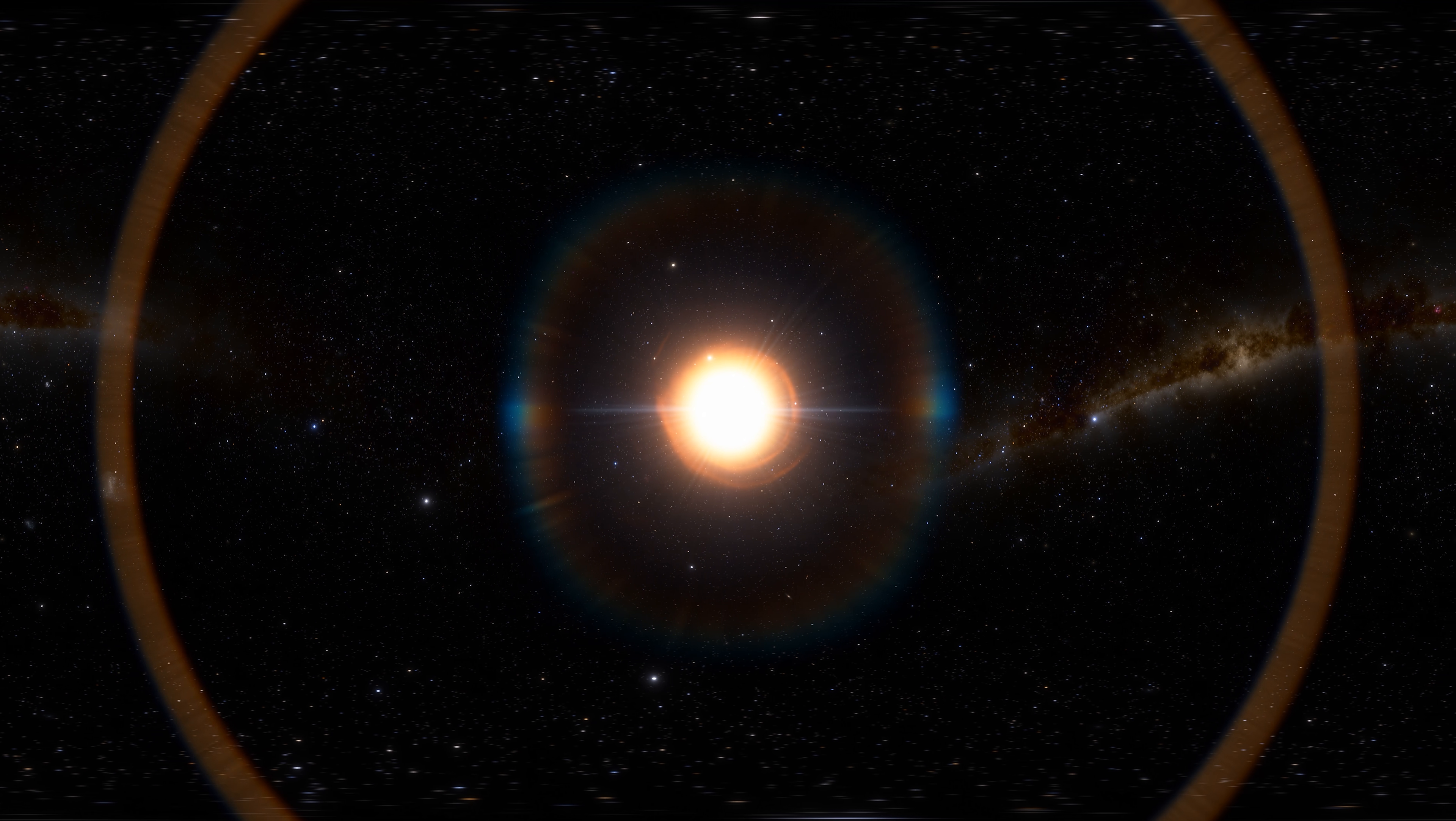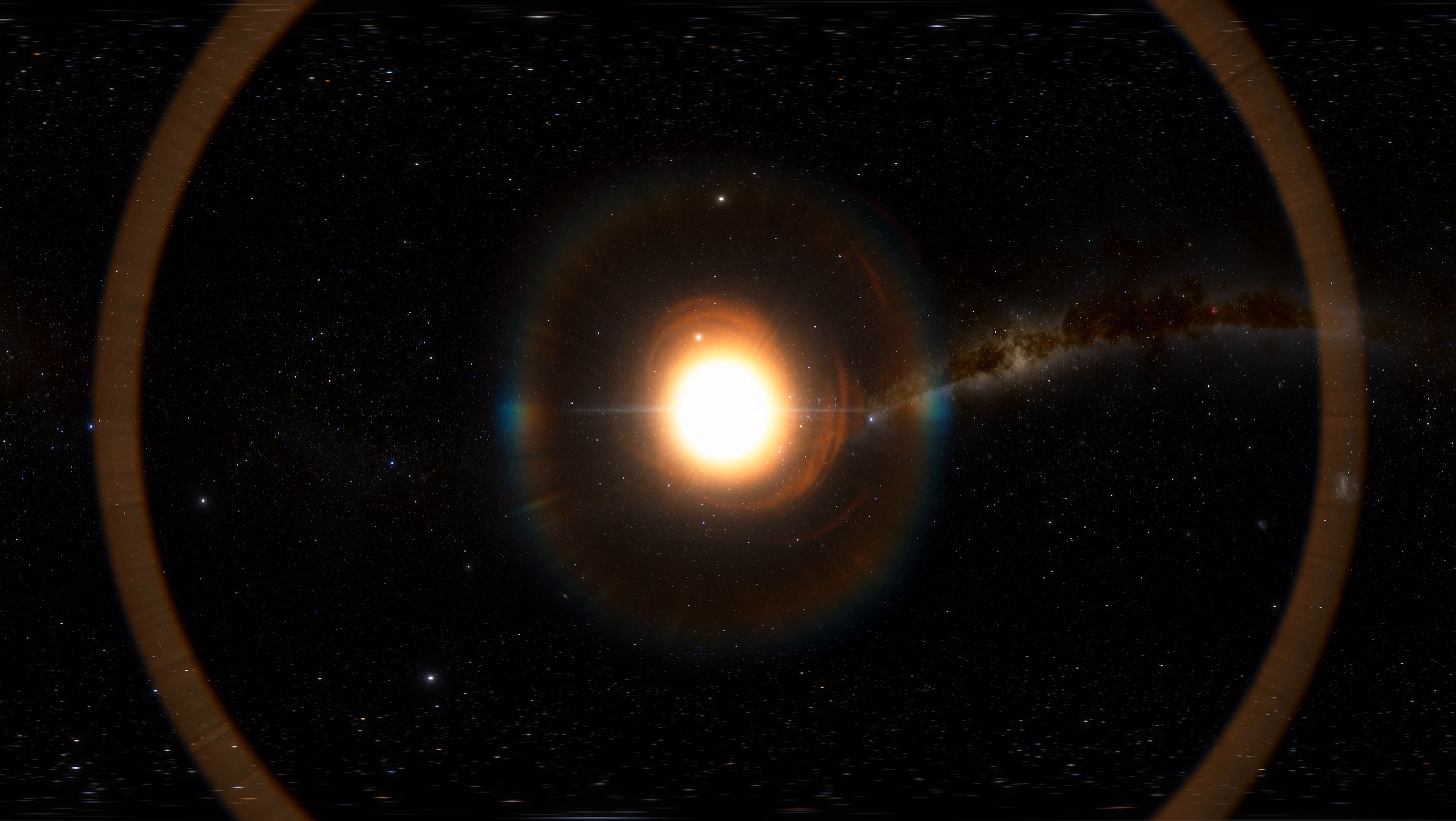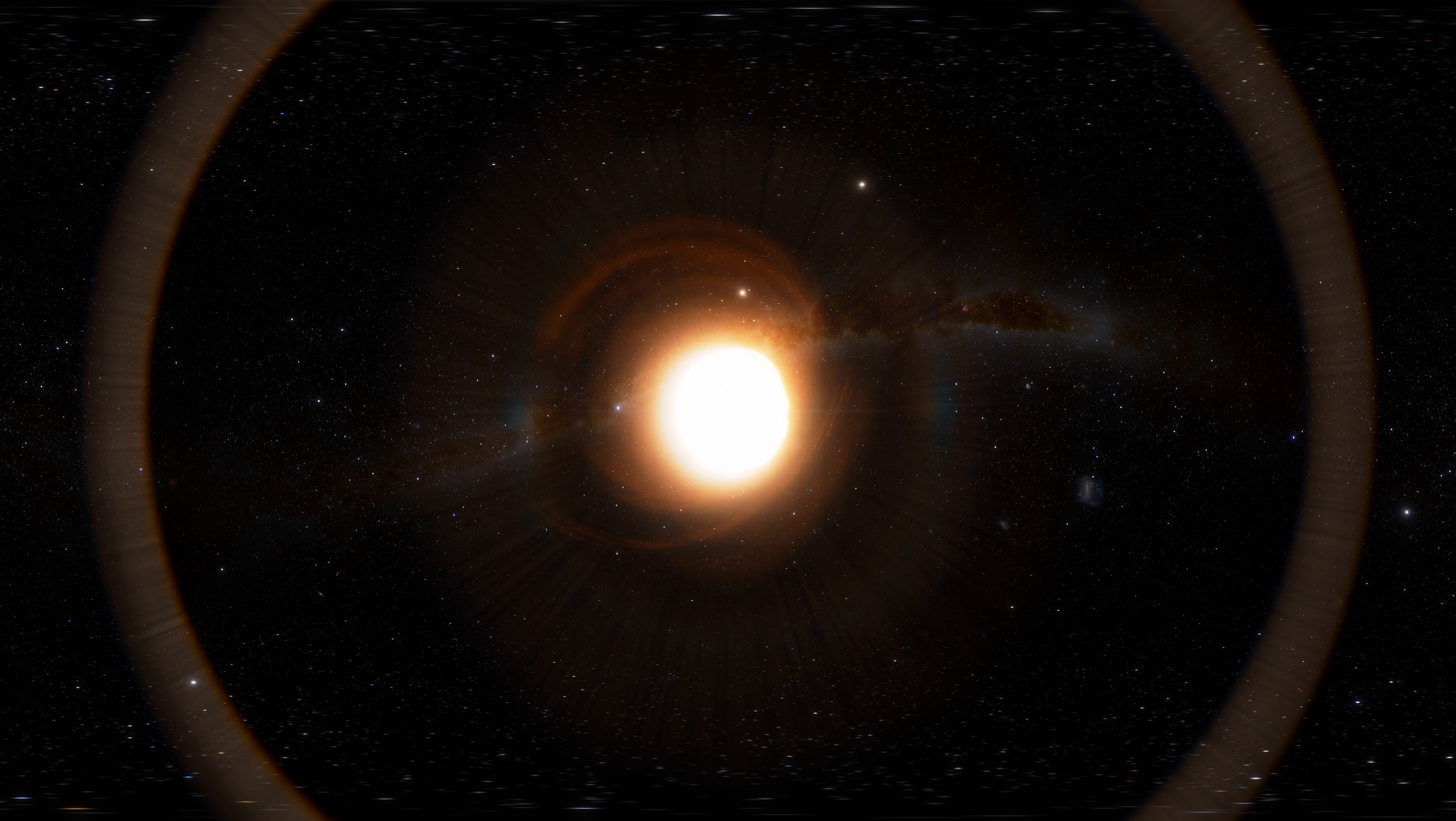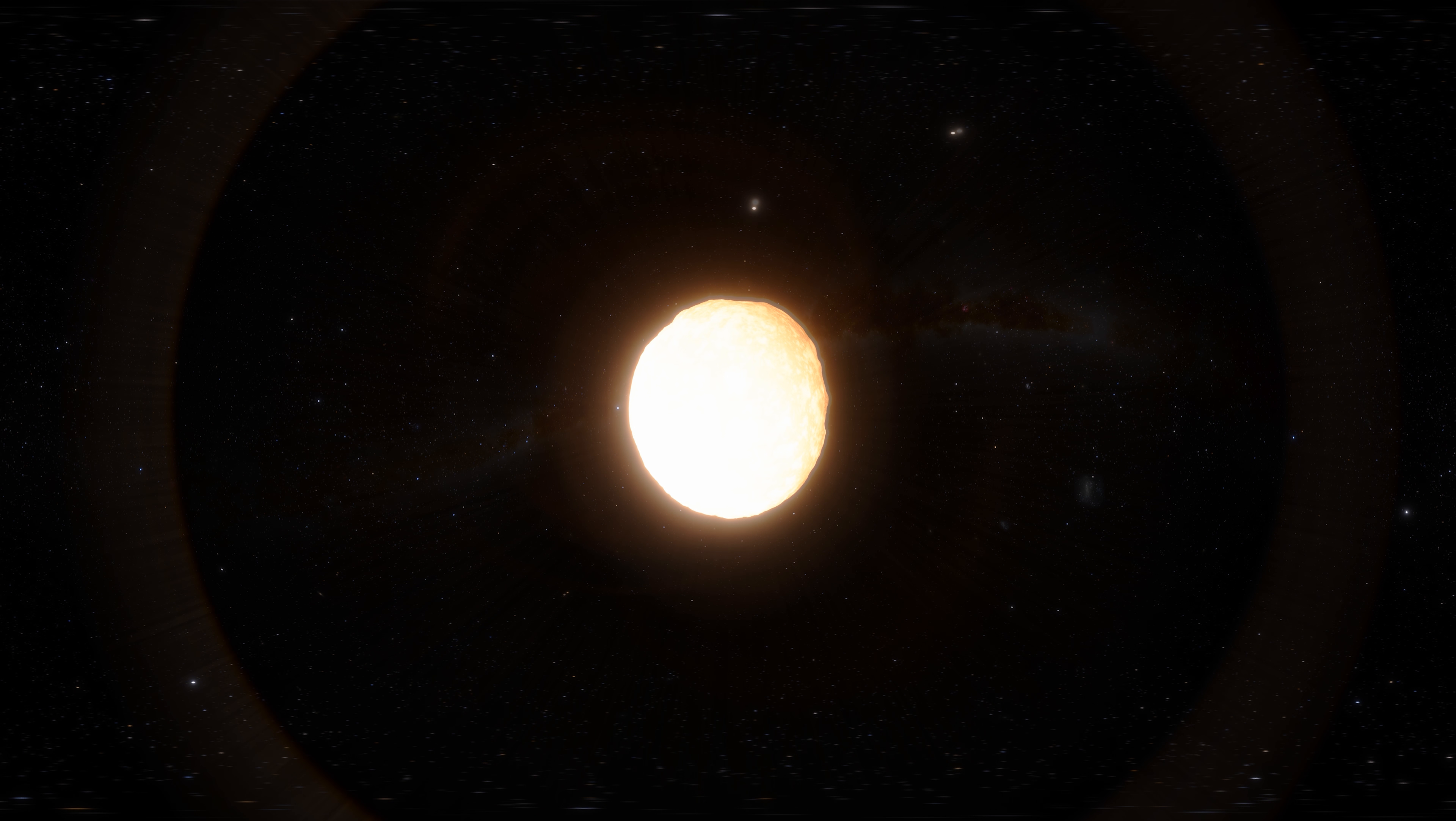However, recent models reject this hypothesis. It is now believed that VY Canis Majoris shines as much as 430,000 times brighter than our Sun. It is so large that light would take as much as 8.5 hours to circle it.